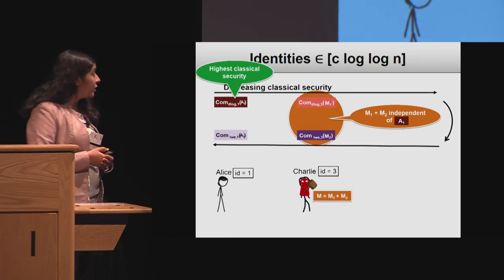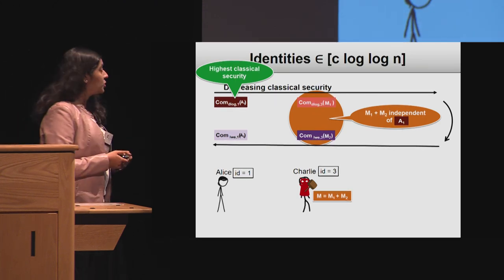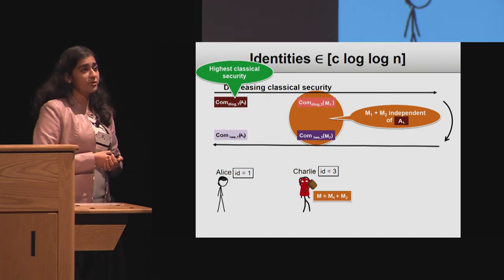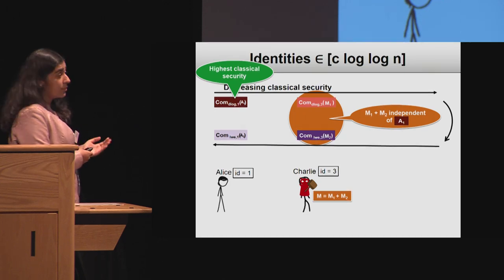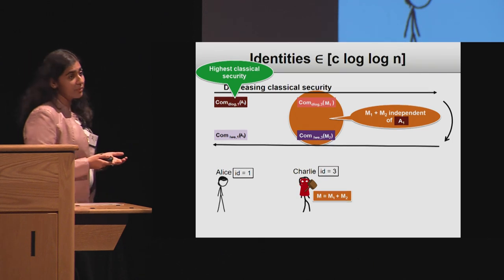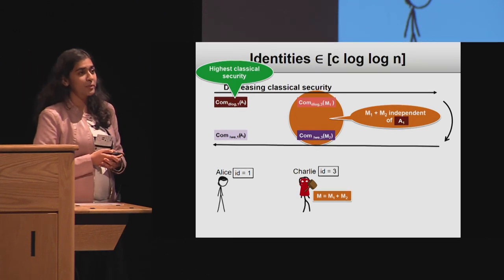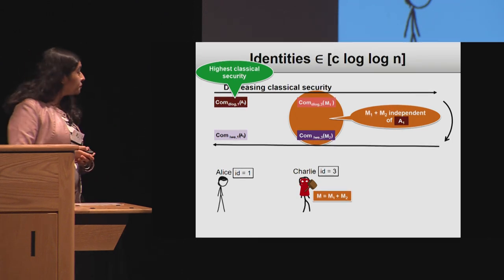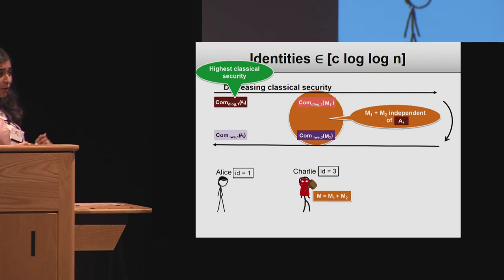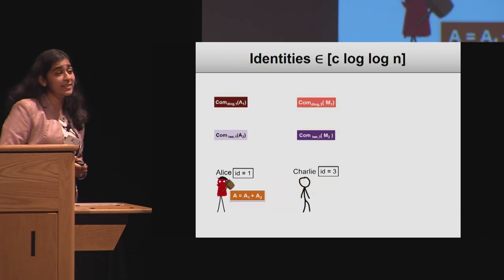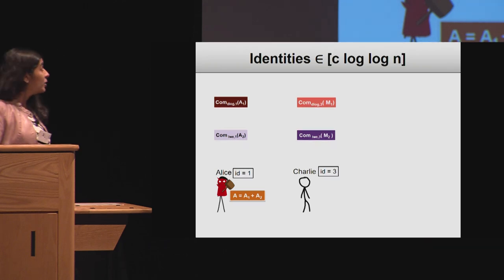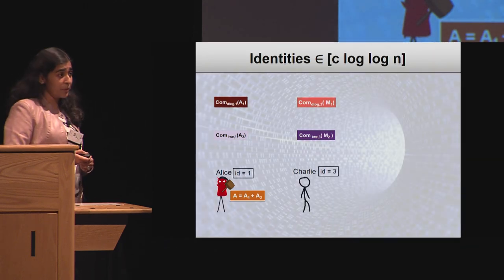What about the other direction — when Alice is the bad guy? In the presence of a quantum computer, the discrete-log-based commitments break down completely and can be broken in polynomial time. We arrange things so that the LWE-based commitments are in decreasing order of quantum security from Charlie to Alice.